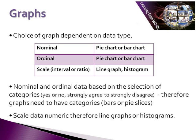As with our choices around the measures of central tendency, the choice of the type of graph that we use is also dependent on the type of variable being interpreted, i.e. whether it is a nominal, ordinal or a scale variable.